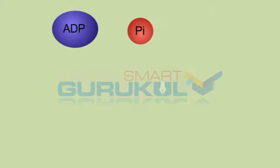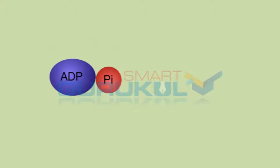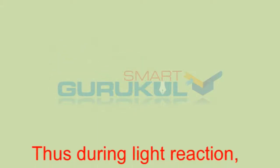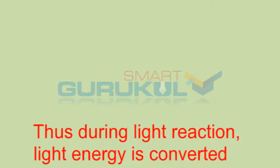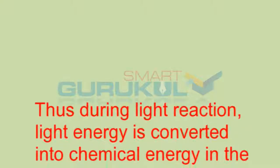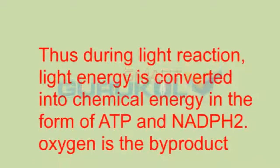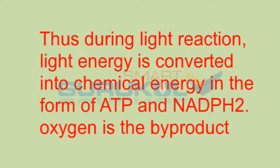And ADP molecule, by utilizing energy from the electrons, converts into ATP. Thus during light reaction, light energy is converted into chemical energy in the form of ATP and NADPH2. Oxygen is the by-product.